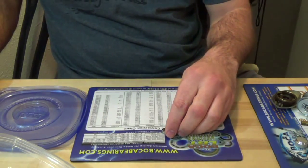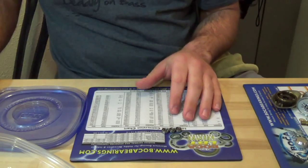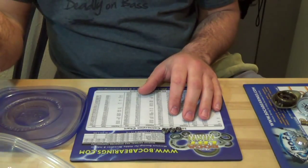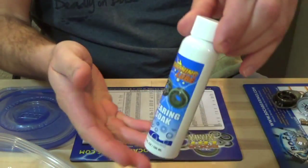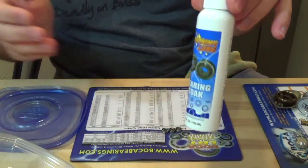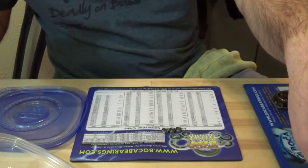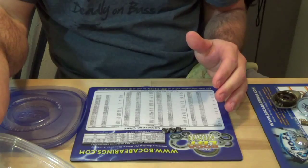Alright guys, we got the bearings here. They're clean, they're dry. Now it's time to soak them in the bearing soak. That's the Boca Bearing Lightning Lube Bearing Soak. And this is going to protect the bearings and just help prolong the life of the bearings.